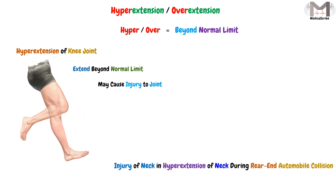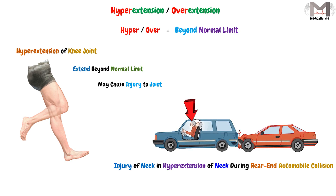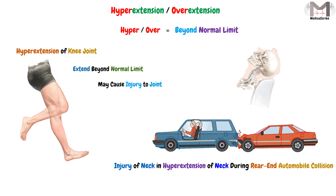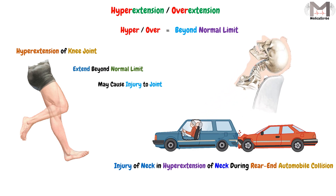An example of hyperextension is an injury of the neck during a rear-end automobile collision. Imagine a person sitting in a car when another car crashes into them from behind — the neck will first be fully hyperextended, and it is possible to damage the neck in this situation. The key point is that hyperextension means the joint extends beyond its normal limit.